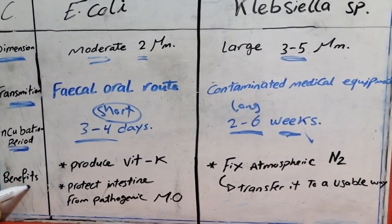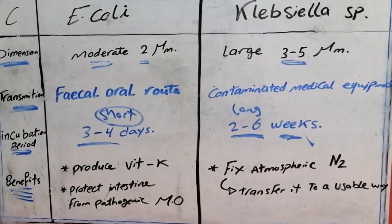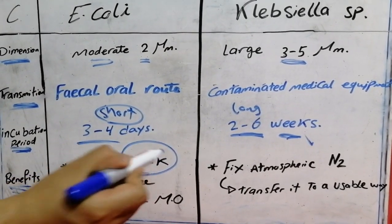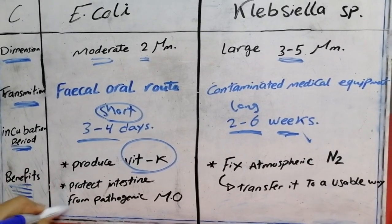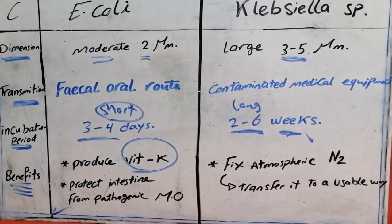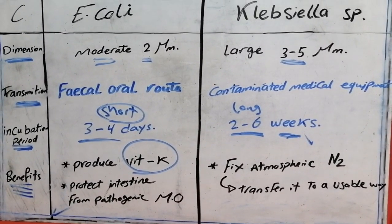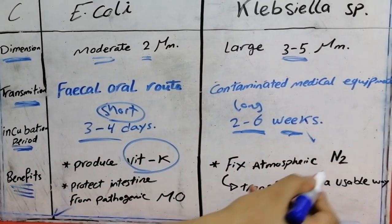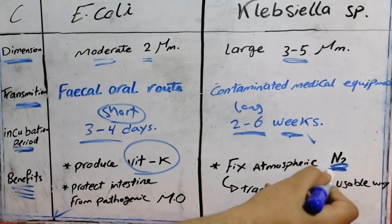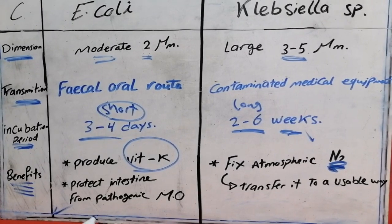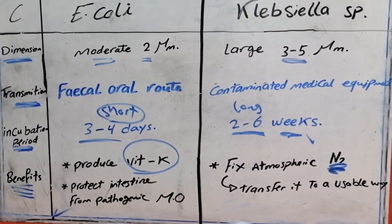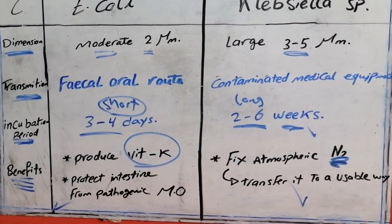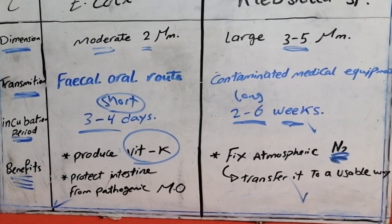E. coli produces vitamin K in our intestine and also protects the intestine from pathogenic microorganisms such as Salmonella and Shigella. While Klebsiella has the ability to fix nitrogen from the atmosphere and transfer it in a very useful way.